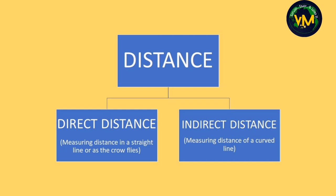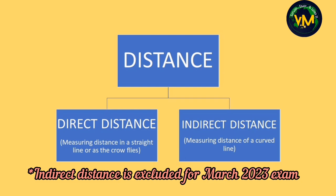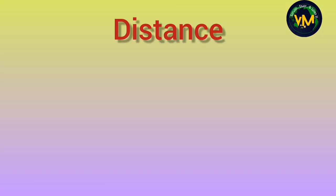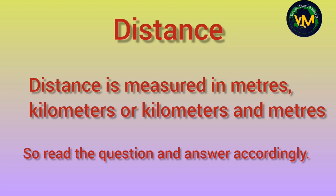There are two ways of calculating distance. One is called direct distance — measuring a distance along a straight line, or we call it measuring the distance as a crow flies. Whenever you are asked to measure the distance along a straight line or when they mention 'as a crow flies,' you calculate the direct distance. Whenever you are asked to measure a curved line such as the length of a road, canal, river, or stream, that is indirect distance. For distance problems in the exam, always remember distance is measured in meters, kilometers, or kilometers and meters.